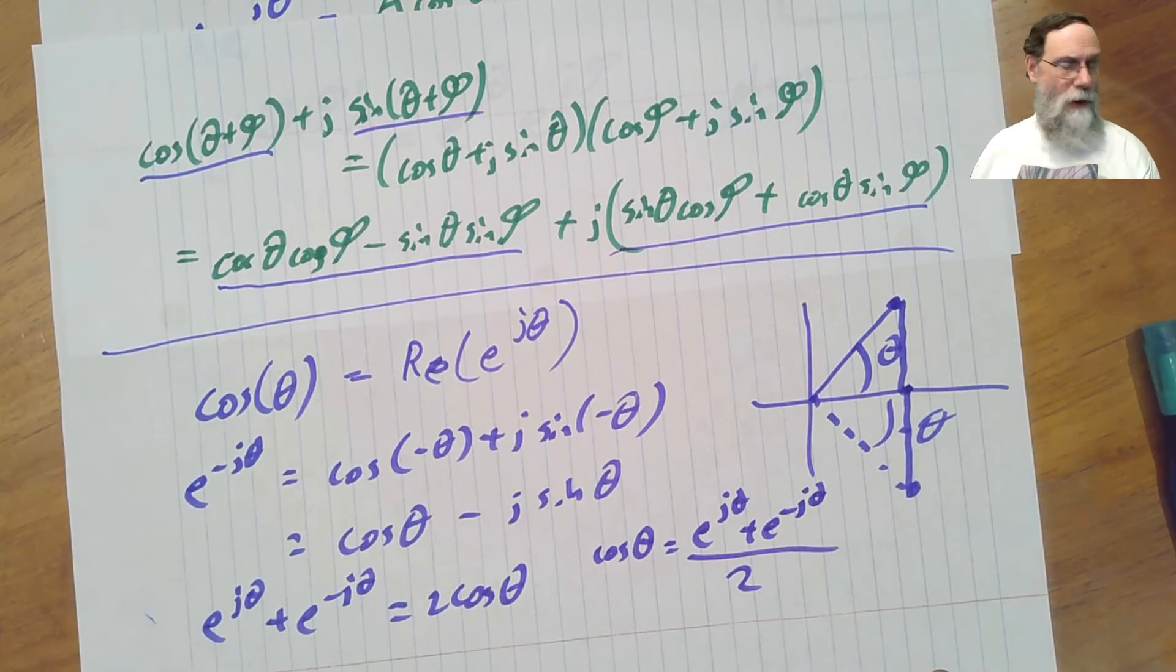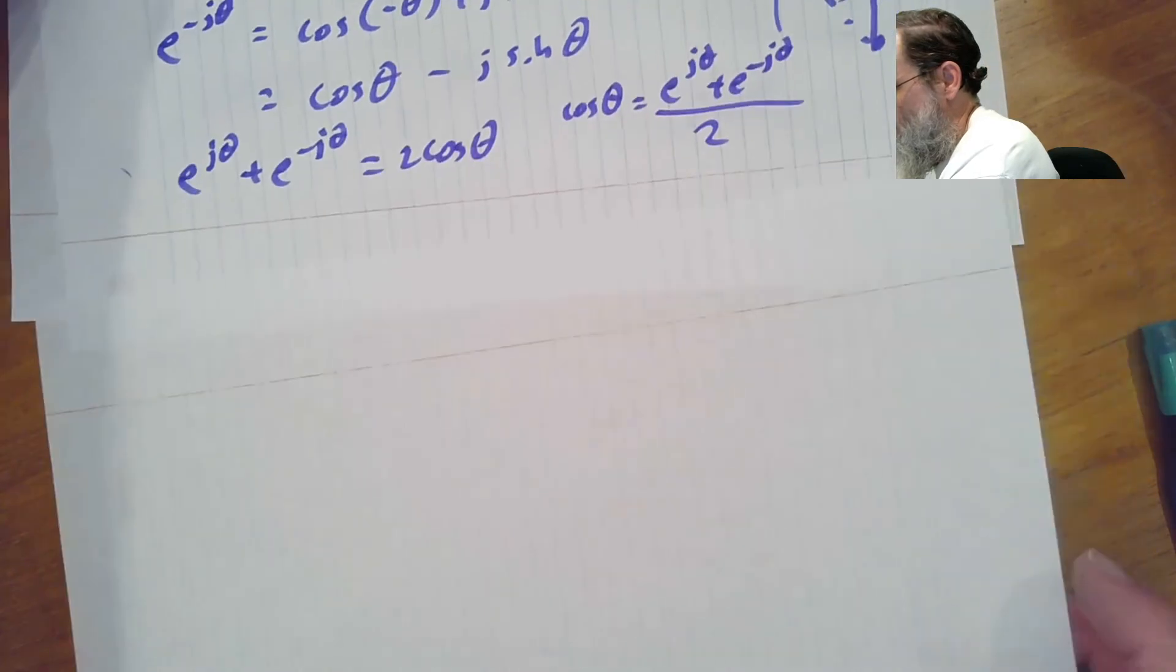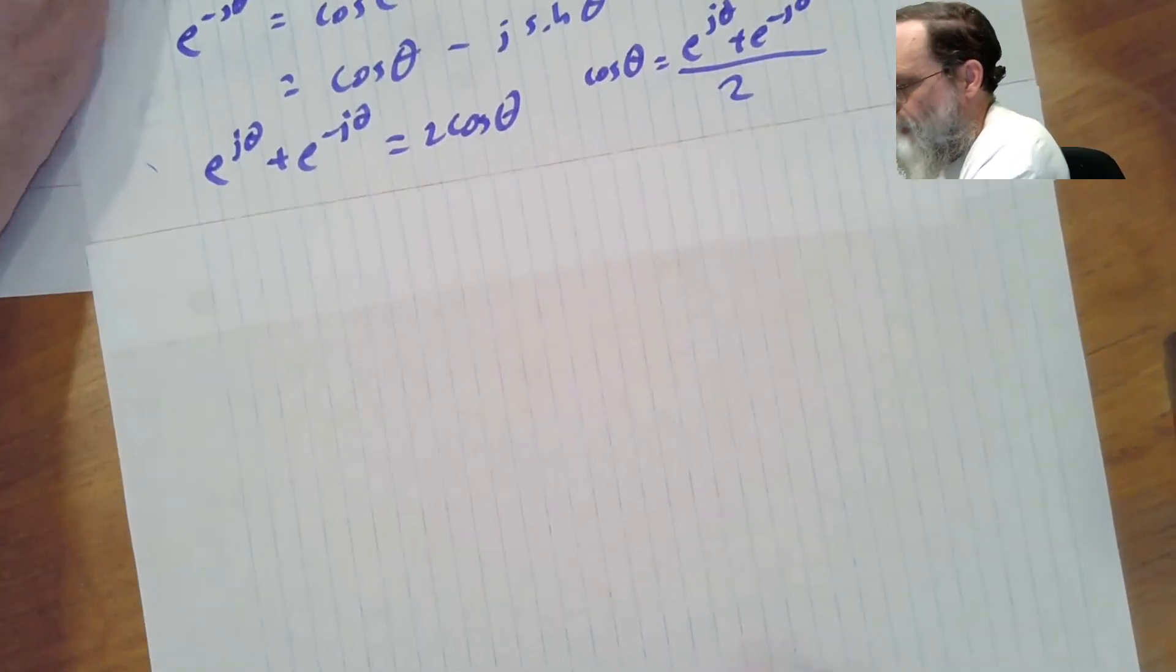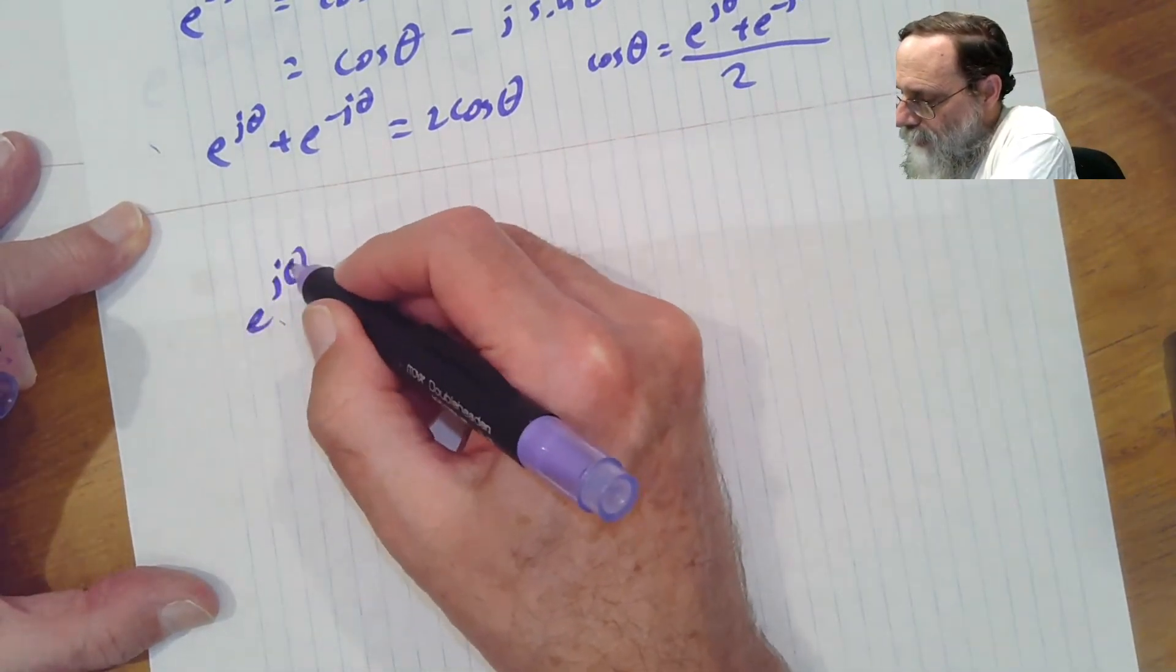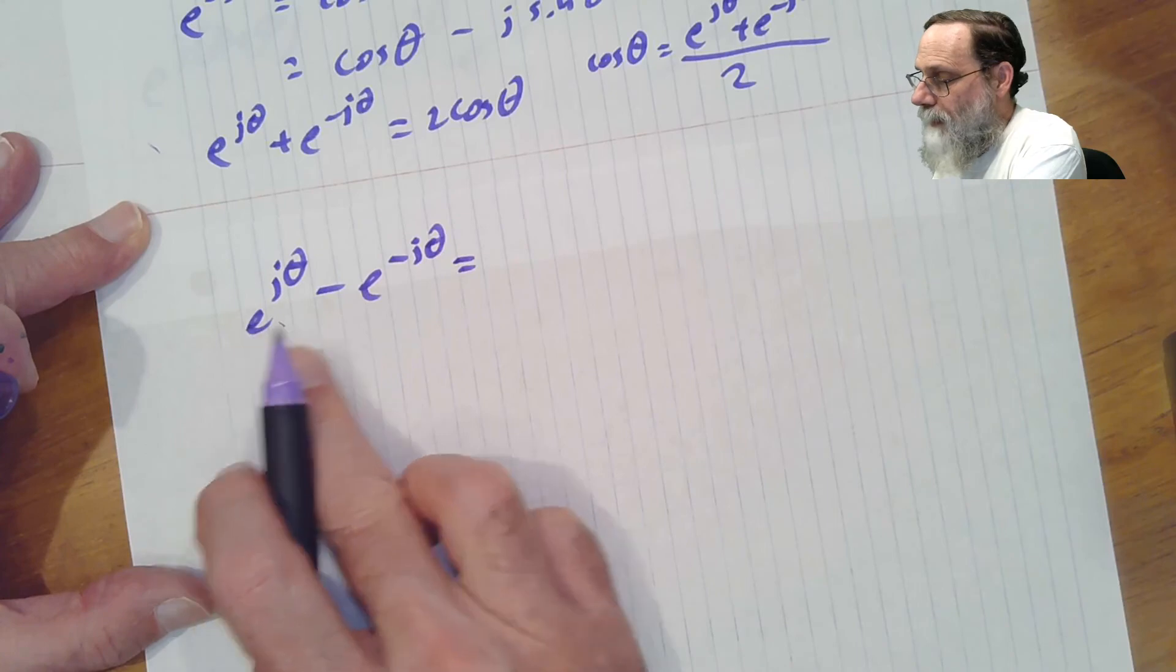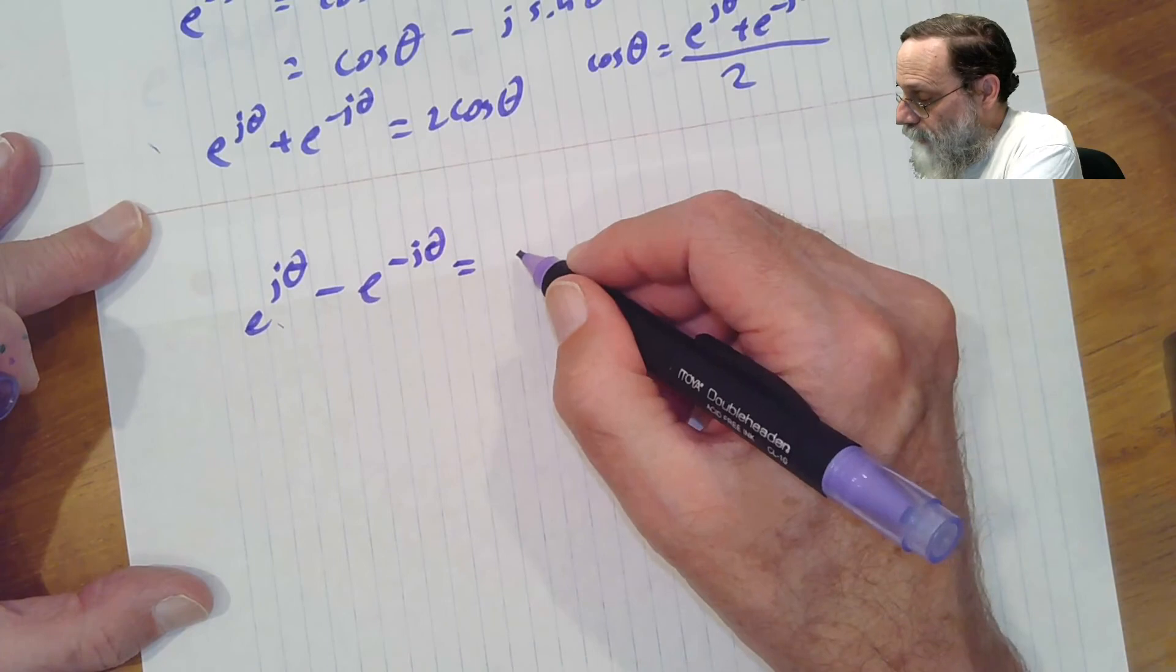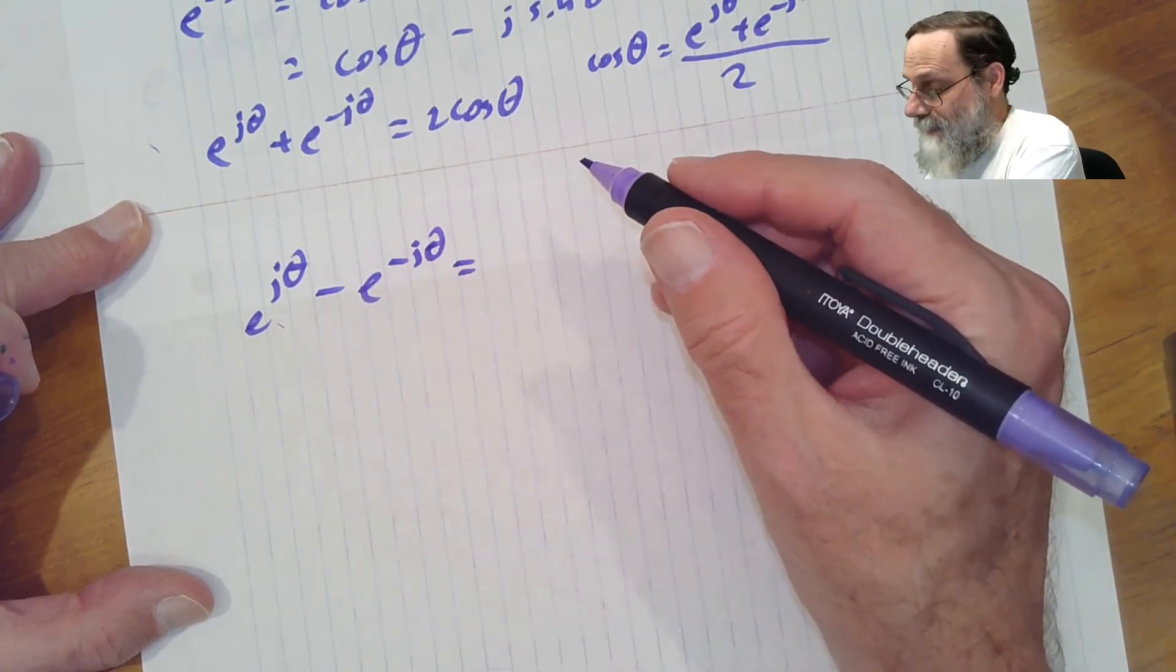We can do a similar thing with subtraction. Let's look at e to the j theta minus e to the minus j theta. Well, we're going to have cosine theta minus cosine theta here, so we're going to have real parts canceling. And we'll have j sine theta minus minus j sine theta.